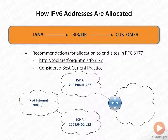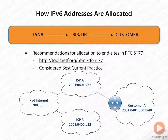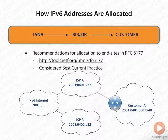ISPB has been allocated the 0402 address space. Those would be allocated by a regional or local internet registrar. So the customer, who is a customer of ISPA, is going to get the 2001:0401 space — that's the address allocated to ISPA. Since this is the A customer, they get the first allocatable address from their ISP, which is 0001/48.